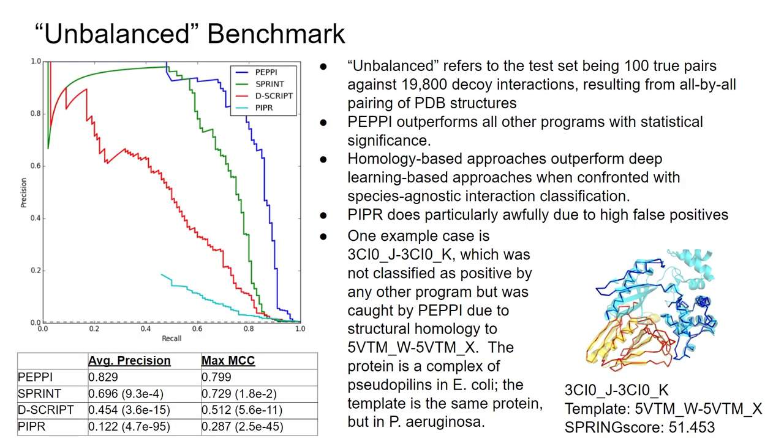After developing this pipeline, we did benchmarks. The most interesting is the unbalanced benchmark, which mimics predicting interactions from a proteome. We took 100 true PDB pairs, split them into 200 chains, paired them all-by-all, then tried pulling out the 100 true pairs. PEPPI outperforms all other programs with statistical significance.